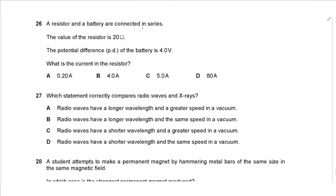Question 26: A resistor of 20 Ω and a battery of 4 V are connected in series. Current equals voltage divided by resistance: 4 ÷ 20 = 0.20 amperes.